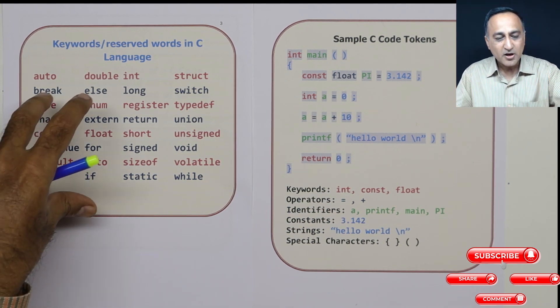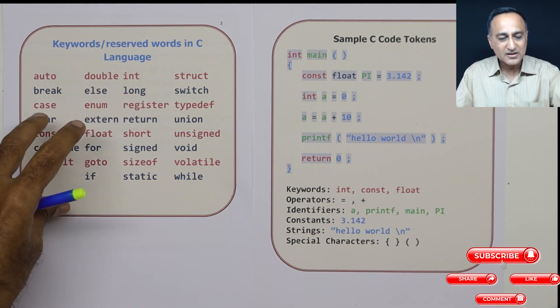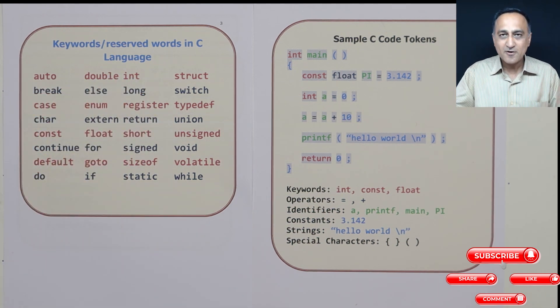I hope with this I'm able to clarify your understanding of what is a token, and most importantly, what are keywords or reserved words in C. Just to be sure, there are just 32 reserved words in C, and you're not supposed to use any of these as names of variables or functions.